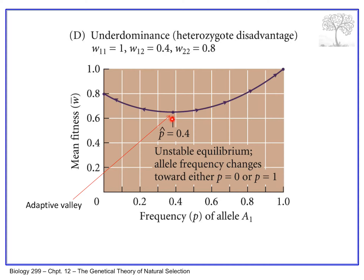In the middle of the landscape, we have the lowest population fitness, which occurs at the highest frequency of heterozygotes — around A1 frequency of 0.4 and A2 frequency of 0.6. The reason this isn't 0.5/0.5 is because the two homozygotes have different fitnesses — one is 1.0 and the other is 0.8.